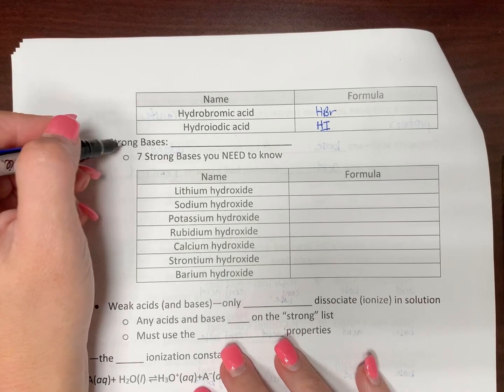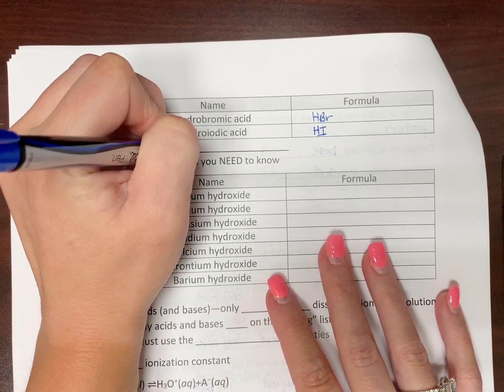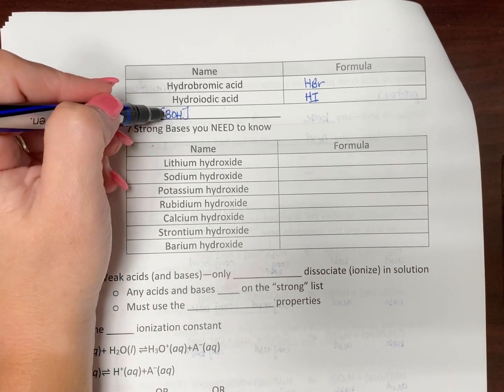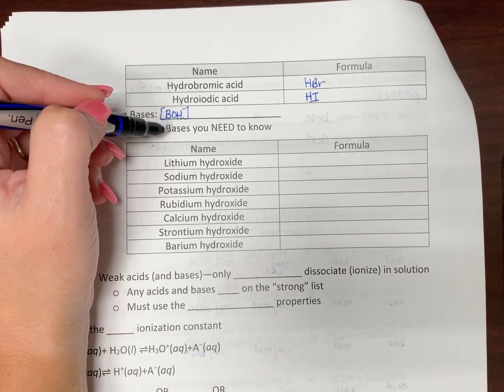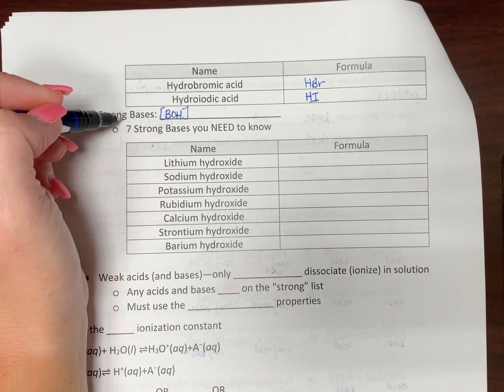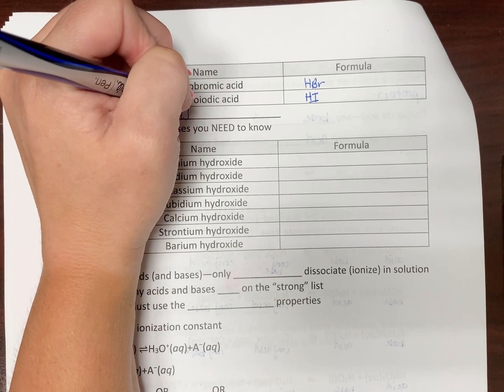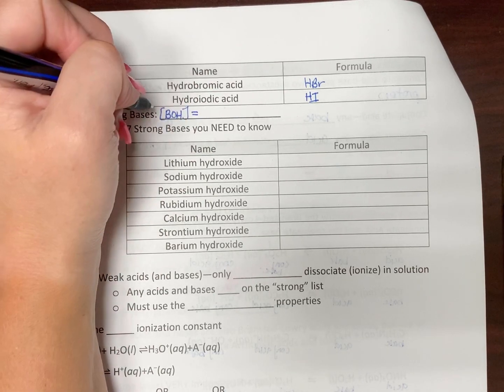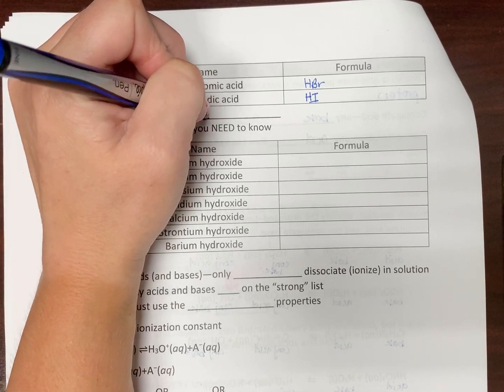Now, with a strong base, we're just going to say our generic formula is BOH. OH because all of our strong bases have a hydroxide group. So B for base and then OH for hydroxide. So that means it's going to completely dissociate. So our concentration of our base is going to equal, sort of, with a few exceptions. I'll talk about those in a minute.